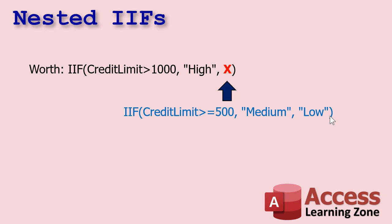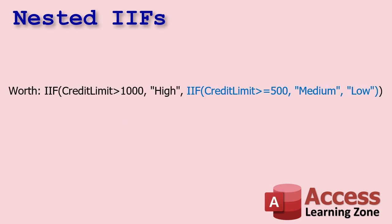The thing to notice about IF functions is: as soon as it reaches a true condition, it drops out. So you don't have to worry about putting in an AND or OR. First it's going to say if it's a thousand or more — high, exit out. If not, evaluate the next condition: is the credit limit greater than or equal to 500? If so, medium. If not, it's going to be low.